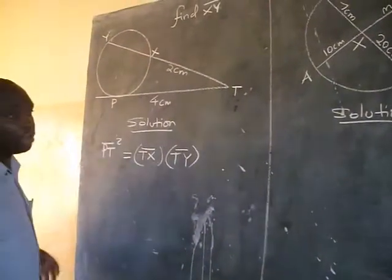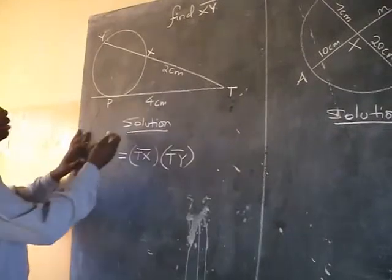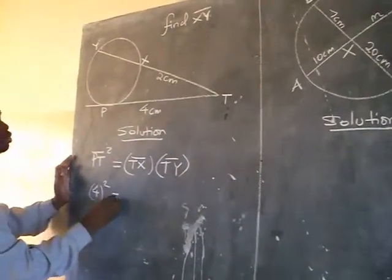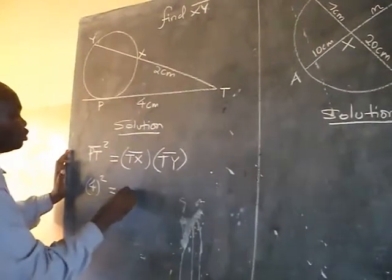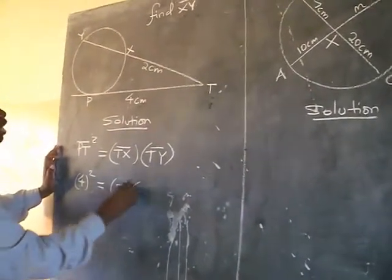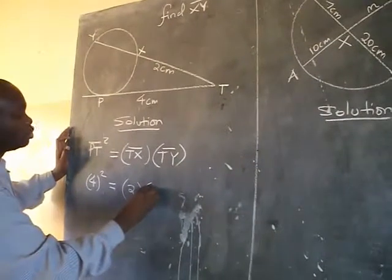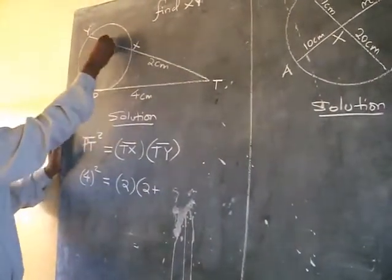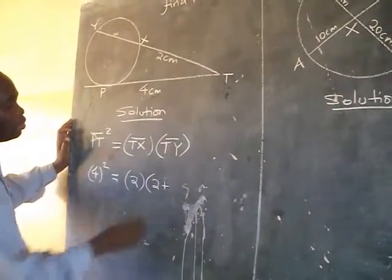So this rule is the one which will help us solve. So on PT we have 4. So this means 4 squared equals, TX is 2, we multiply by TY whereby we have 2 plus, let us assume this one is w. We select w.